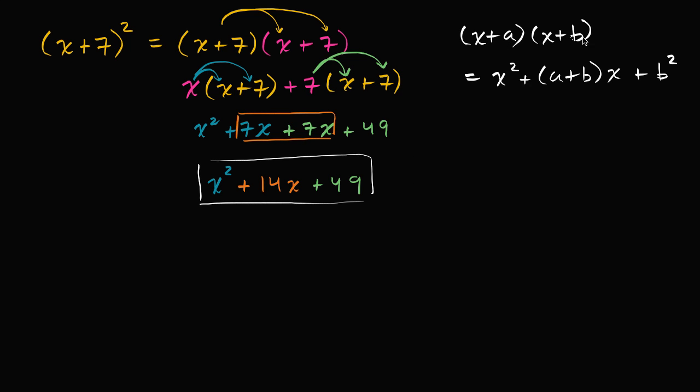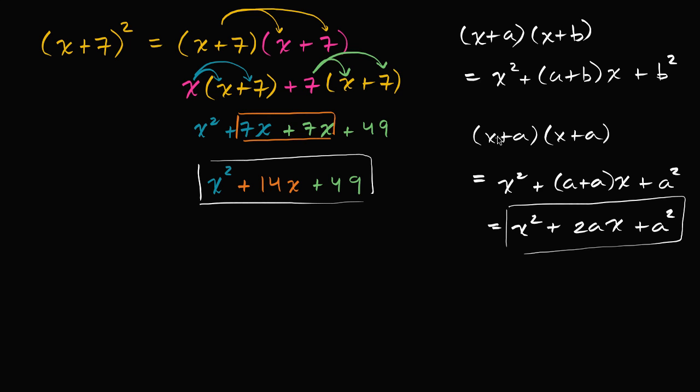If both a and b are the same, we could say (x + a)(x + a) = x². In this case, a and b are both a, so it's a plus a times x, or 2ax. So we get x² + 2ax + a². This is a general way of expressing a squared binomial where the coefficients on both x's are 1.